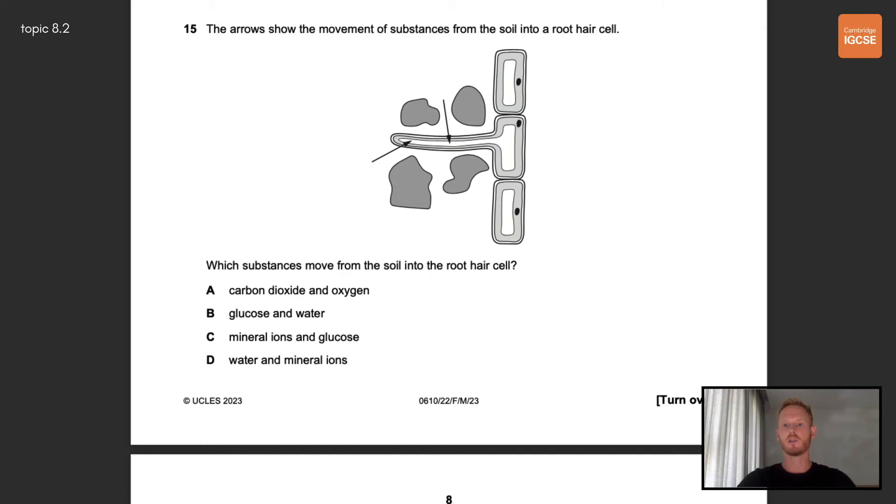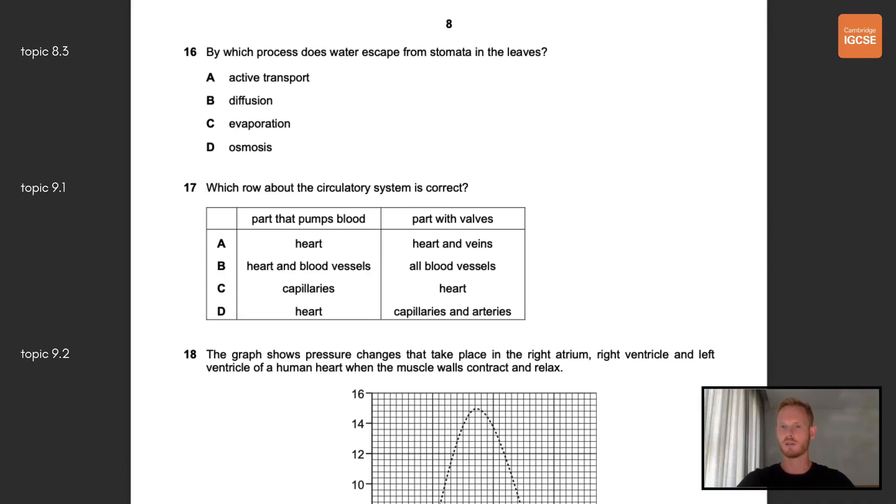Number 15, the arrows show the movement of substances from the soil into a root hair cell. Which substances move from the soil into the root hair cell? The correct answer here is D, water and mineral ions. The other options here, carbon dioxide and oxygen, enter plants through stomata in the leaves and glucose is produced in the leaves by photosynthesis. Number 16, by which process does water escape from stomata in the leaves? Now you might be tempted to go for evaporation here, however the correct answer is B, diffusion. Water evaporates from the surfaces of the mesophyll cells into the air spaces and then diffuses out of the leaf through stomata.